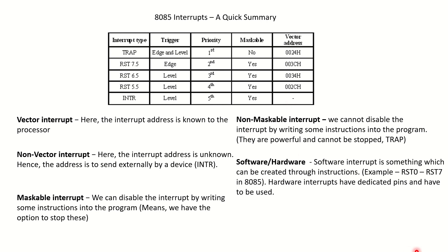Why does INTR have no fixed address? Vectored interrupts have addresses already allocated and their location is well known. Non-vectored interrupts like INTR do not have a predefined location — their address must be sent externally by a device. Maskable interrupts are those we can disable or stop, while non-maskable interrupts cannot be stopped — they are the highest priority and will always run.